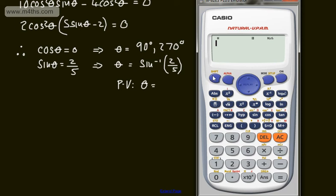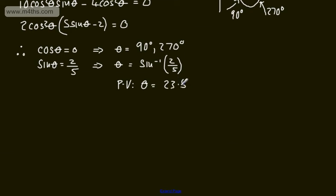In a calculator, making sure you're in degrees mode, shift mode 3, we'll take the inverse sine of 0.4 or 2 fifths, principal value of 23.578.